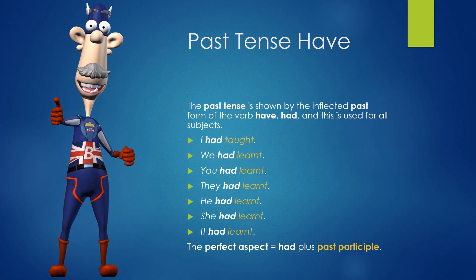Past tense have. The past tense is shown by the inflected past form of the verb have — had — and this is used for all subjects: I had taught, we had learnt, you had learnt, they had learnt, he had learnt, she had learnt, it had learnt. The perfect aspect is had plus past participle.